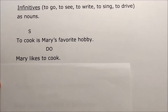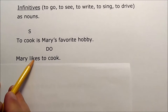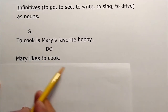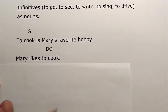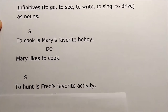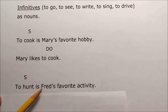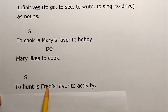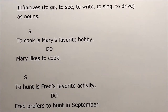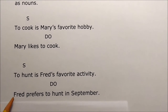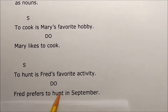'Mary likes to cook' — 'Mary' is the subject, 'likes' is the verb, and 'to cook' becomes the direct object. Even though it's an infinitive form of the verb, it can be used as a direct object. Another example: 'To hunt is Fred's favorite activity' — the subject is 'to hunt,' 'activity' is the subject equivalent, and 'Fred's' and 'favorite' are adjectives. The verb is 'is.' And 'Fred prefers to hunt in September' — 'Fred' is subject, 'prefers' is verb, 'to hunt' is the direct object, and 'in September' is a prepositional phrase.